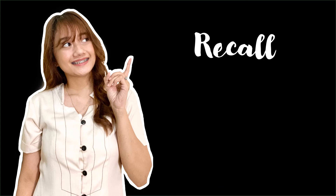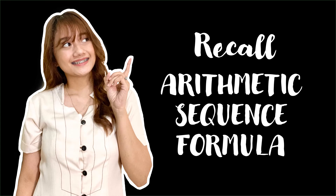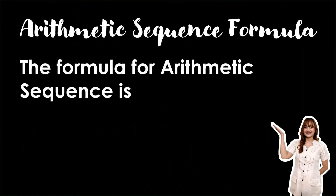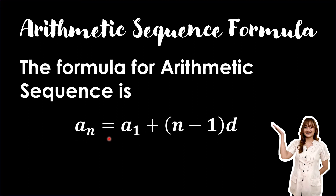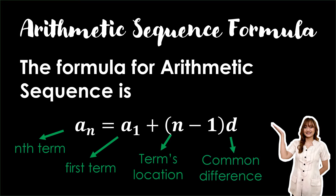Before that, let us have some recall about the arithmetic sequence formula. The formula for arithmetic sequence is: a sub n is equal to a sub 1 plus the quantity n minus 1 times d, where a sub n is our nth term, a sub 1 is our first term, n is our term's location, and d is our common difference.